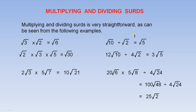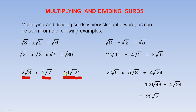Multiplying and dividing CERDs is very straightforward, as can be seen from the following examples. The square root of 3 times the square root of 2 is the square root of 6. The square root of 2 times the square root of 3 times the square root of 5 is the square root of 30, because 2 times 3 is 6, and 6 times 5 is 30. 2 times the square root of 3, multiplied by 5 times the square root of 7, is 10 times the square root of 21, because 2 times 5 is 10, and 3 times 7 is 21.